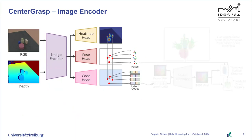The input to our model is a single RGBD observation of the scene. The encoder consists of a ResNet-based FPN backbone, which produces a pyramid of features. These features are then fed to three specialized heads: heatmap, pose, and latent code heads. All heads output an image with per-pixel predictions. The heatmap head predicts the probability of objectness for each pixel as a scalar value between 0 and 1. The pose head predicts the 6D pose of the object at the given pixel. The code head predicts a latent representation of the object.